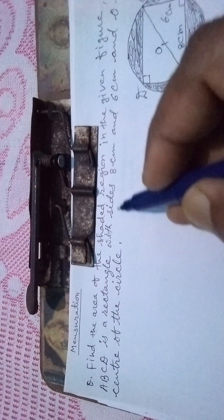The question is, find the area of the shaded region in the given figure if ABCD is a rectangle with sides 8 centimeters and 6 centimeters and O is the center of the circle.